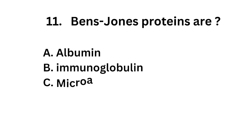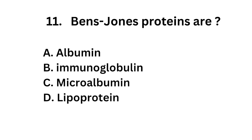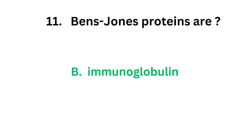Question number 11. Bence-Jones proteins are: Option A: Albumin. Option B: Immunoglobulin. Option C: Microalbumin. Option D: Lipoprotein. The correct answer is Option B, Immunoglobulin. Bence-Jones proteins are immunoglobulins.